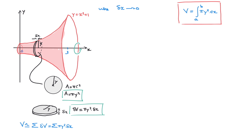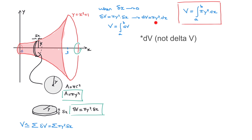When δx tends towards 0, δv = πy² · δx tends towards dv = πy² dx. Because we're now dealing with the infinitely small, we replace the summation symbol (sigma) by the integral. Therefore, the volume created by revolving a curve about the x-axis through 360 degrees between x = a and x = b is equal to the definite integral from a to b of πy² dx. That explains the formula.